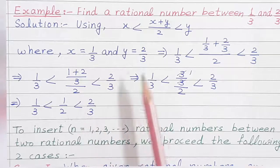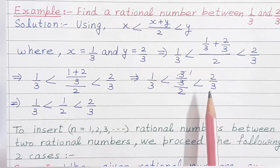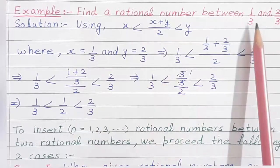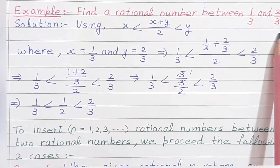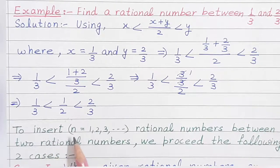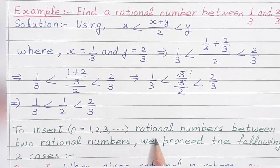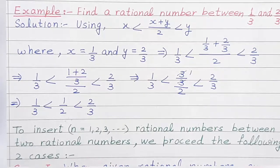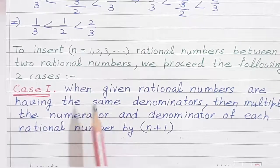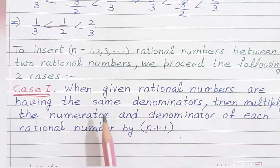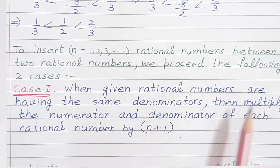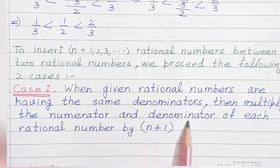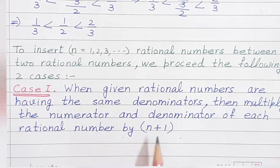So let us discuss more methods to find rational numbers between two given rational numbers — to insert n = 1, 2, 3 and so on numbers. We proceed with the following two cases. Case 1 is when the given rational numbers have the same denominator — then multiply the numerator and denominator of each rational number by n plus 1. Let us understand this with an example.